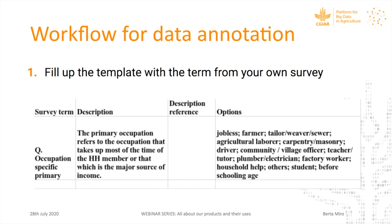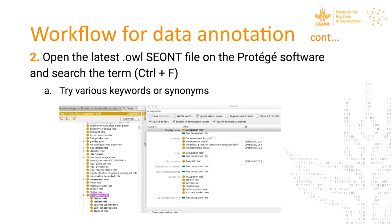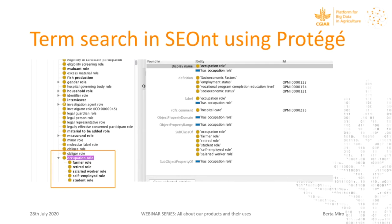To proceed with the term annotation, we developed a workflow and the first step was to fill up an Excel template with the following fields: the survey term as written in the survey — in this example 'occupation specific primary'; the description of the term from the survey explanation provided to interviewers; a reference for the description; and the drop-down options offered to respondents. Each of these options also has to be annotated with an ontology term, not only the main term.